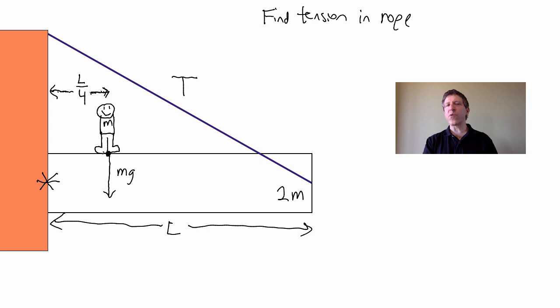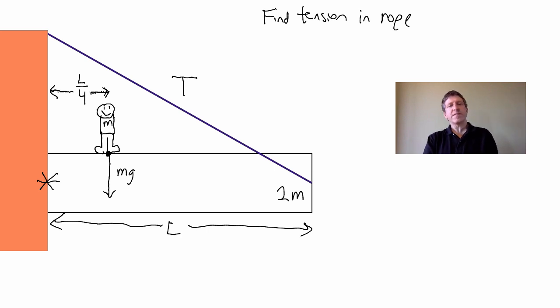If the sign were accelerating, you might ask whether that force would be MG. The answer is no — the normal force would be less than MG if that person was accelerating. So the force of the person on the sign would be less than MG.